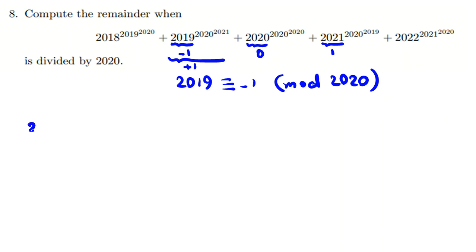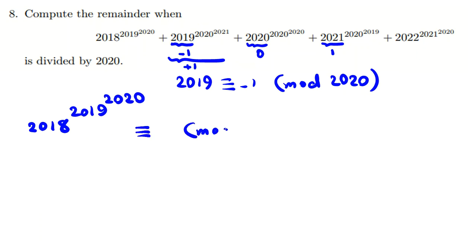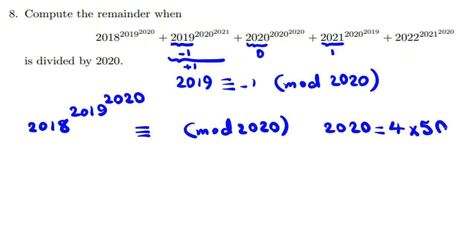We want to consider 2018 to the power of 2019 to the power of 2020, all mod 2020. Since 2020 is even we can split it as 4 times 505. Let me call this expression x, and the other term y.